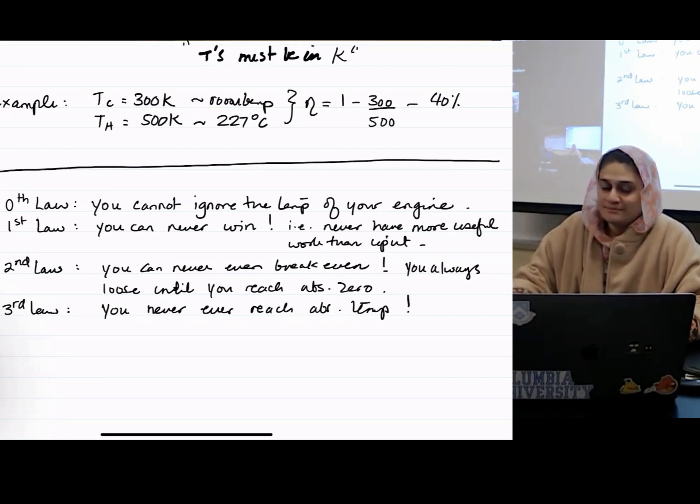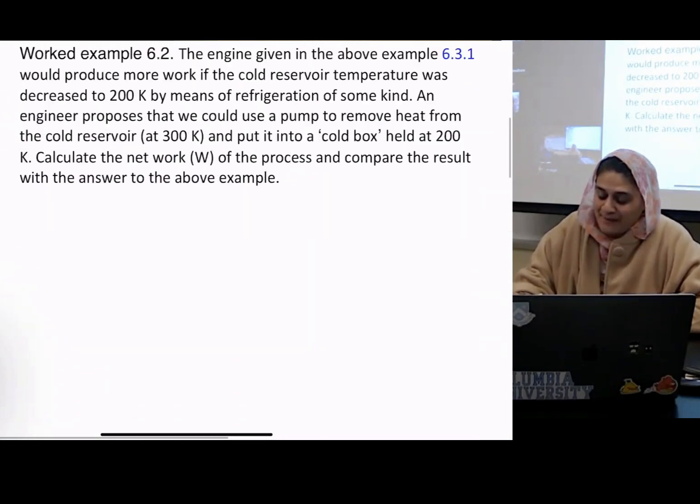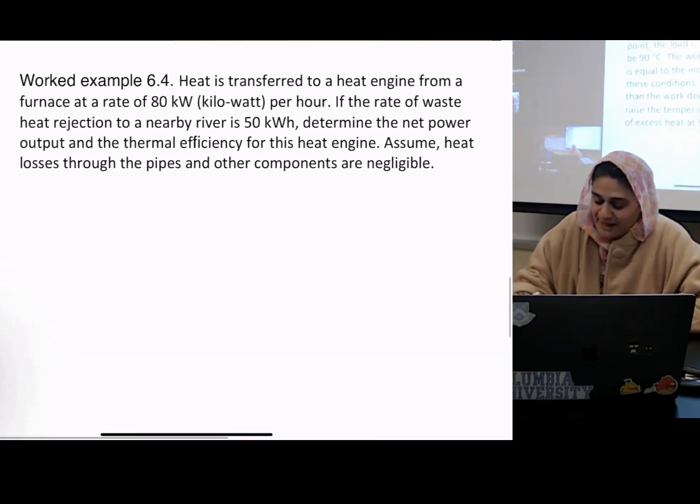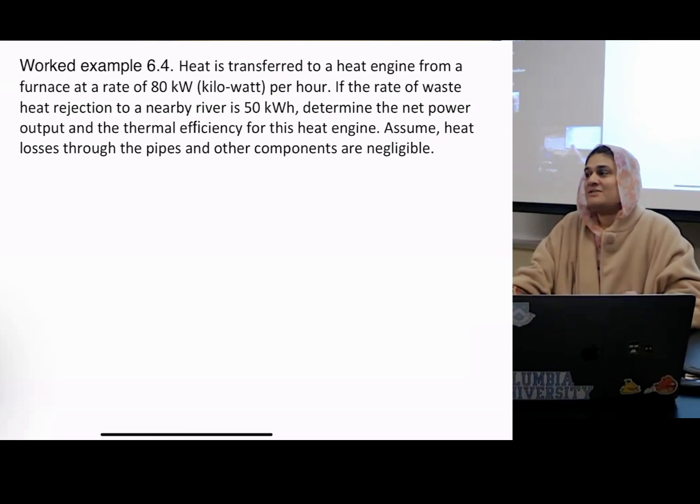So on that happy note, let's talk about what actually happens. Somebody read. Heat is transferred to a heat engine from a furnace at a rate of 80 kilowatts per hour. If the rate of waste heat rejection to a nearby river is 50 kilowatt hours, determine the net power output and the thermal efficiency for this heat engine. Assume heat losses through the pipe and other components are negligible. Again, as ideal as we can get it. Is that true? Can we ever ignore heat losses? Nope.